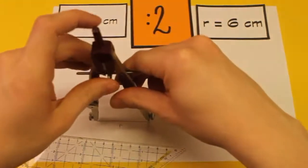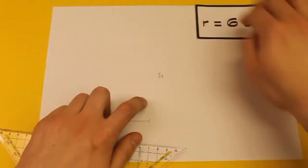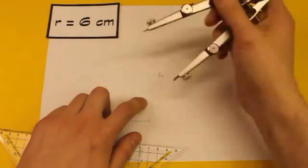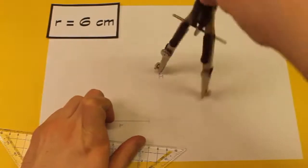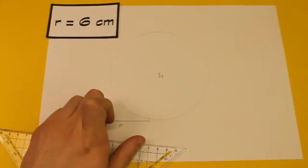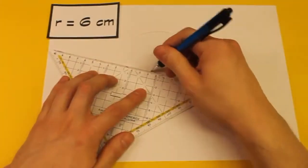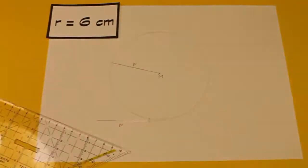Aufpassen, dass ihr dabei genau seid. Drittens, wir zeichnen den Mittelpunkt ein. Viertens, wir stechen mit dem Zirkel beim Mittelpunkt ein. Fünftens, wir konstruieren den Kreis. Und sechstens, wir zeichnen den Radius ein und beschriften ihn auch. Und damit ist der Kreis wieder fertig.